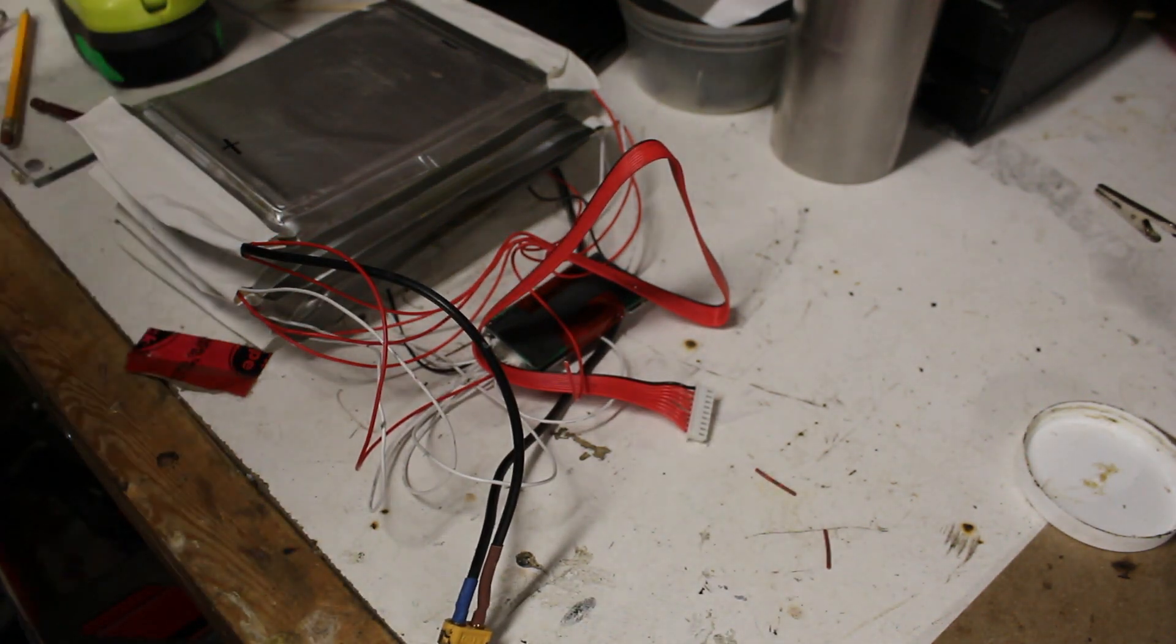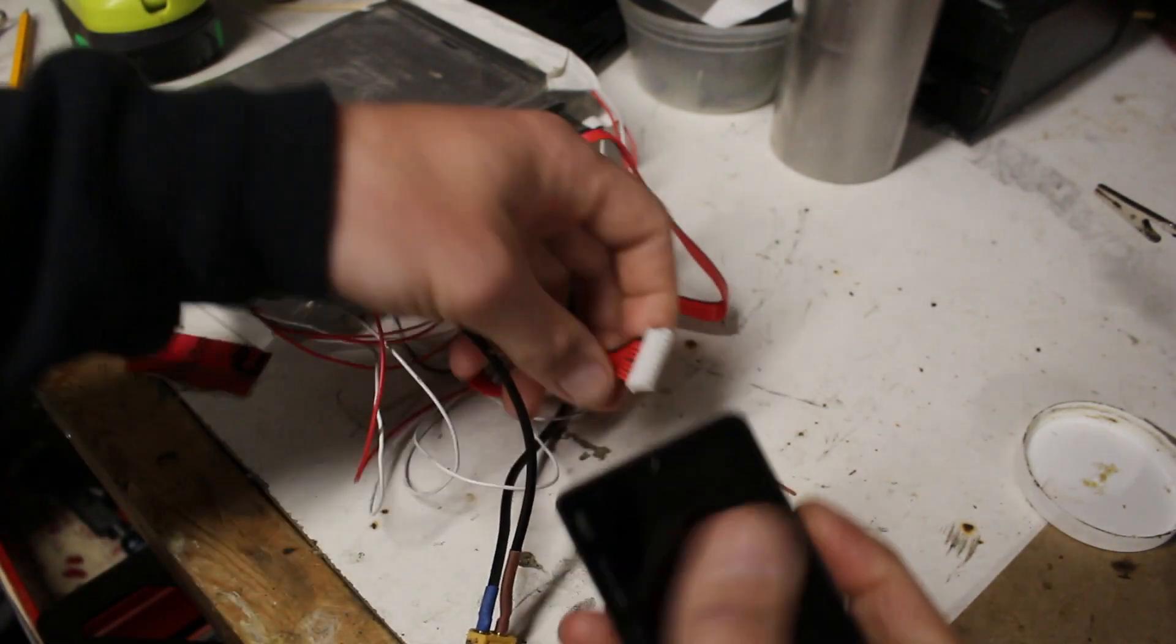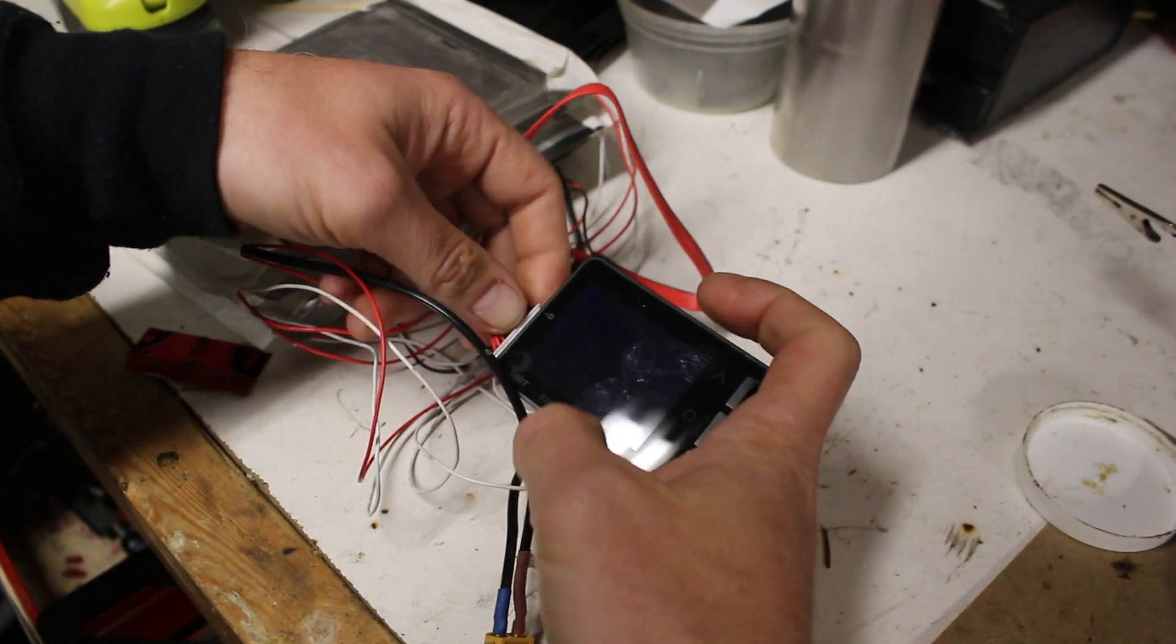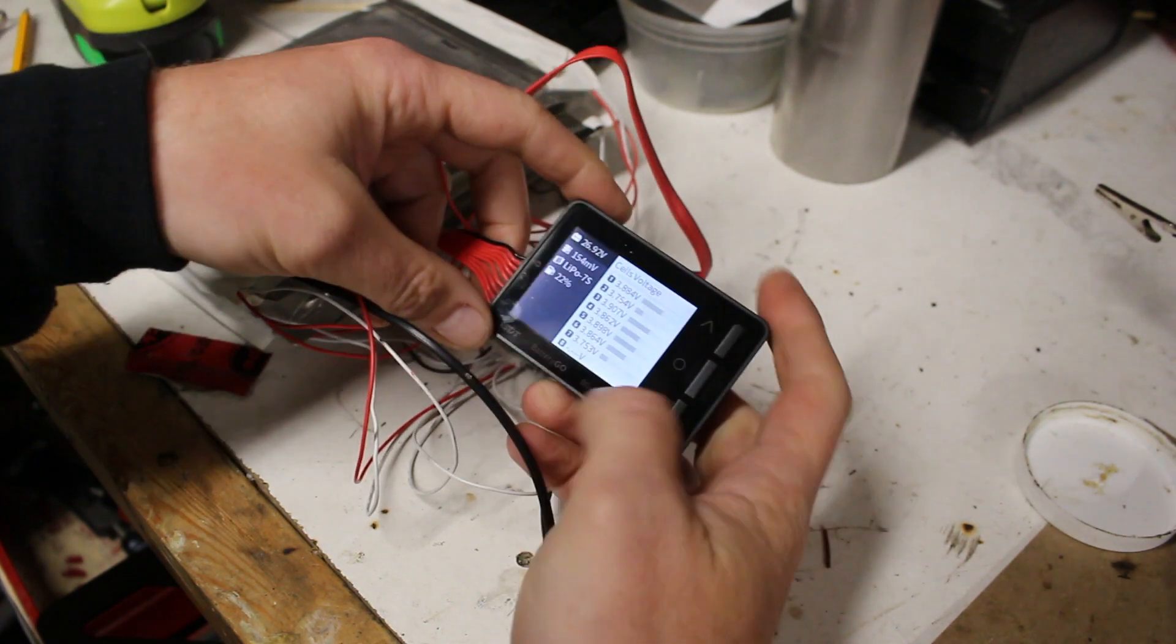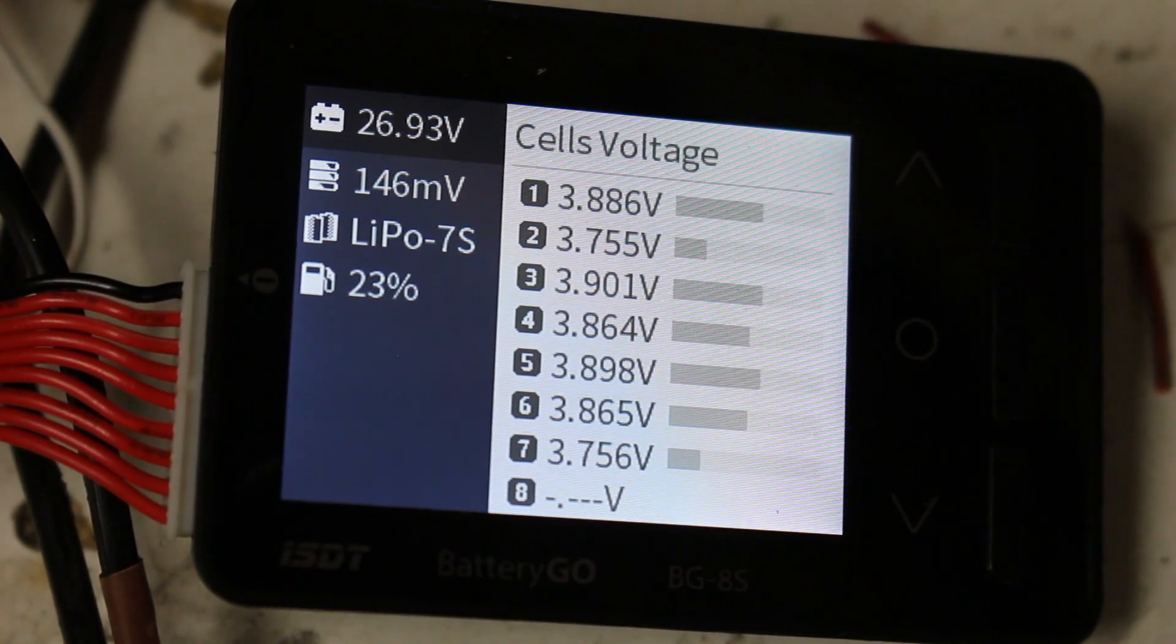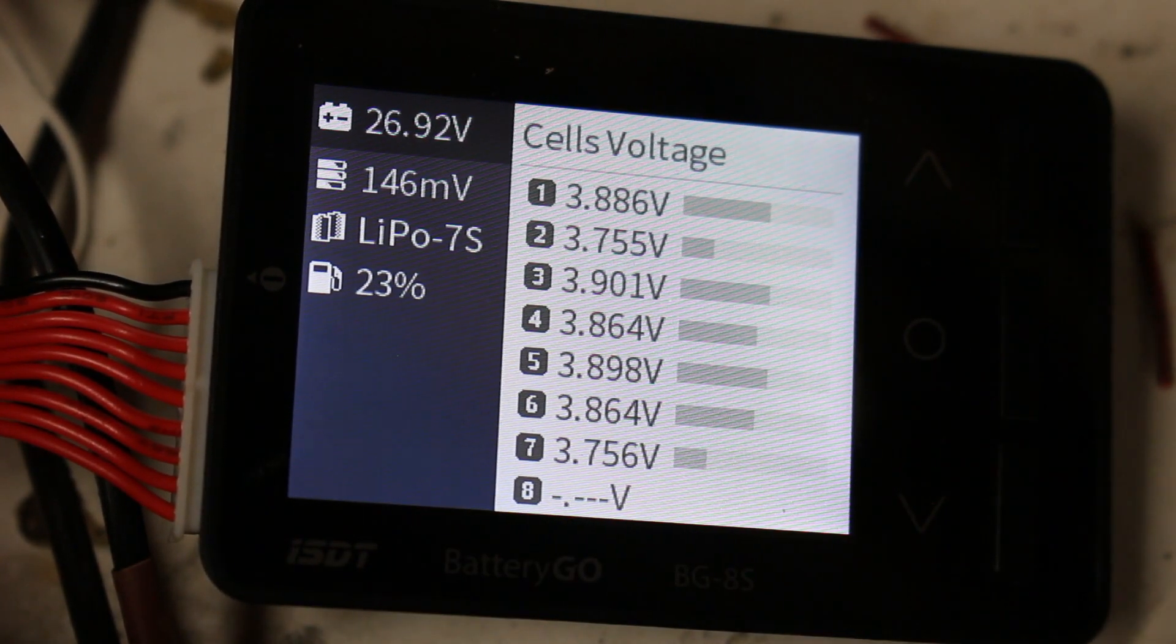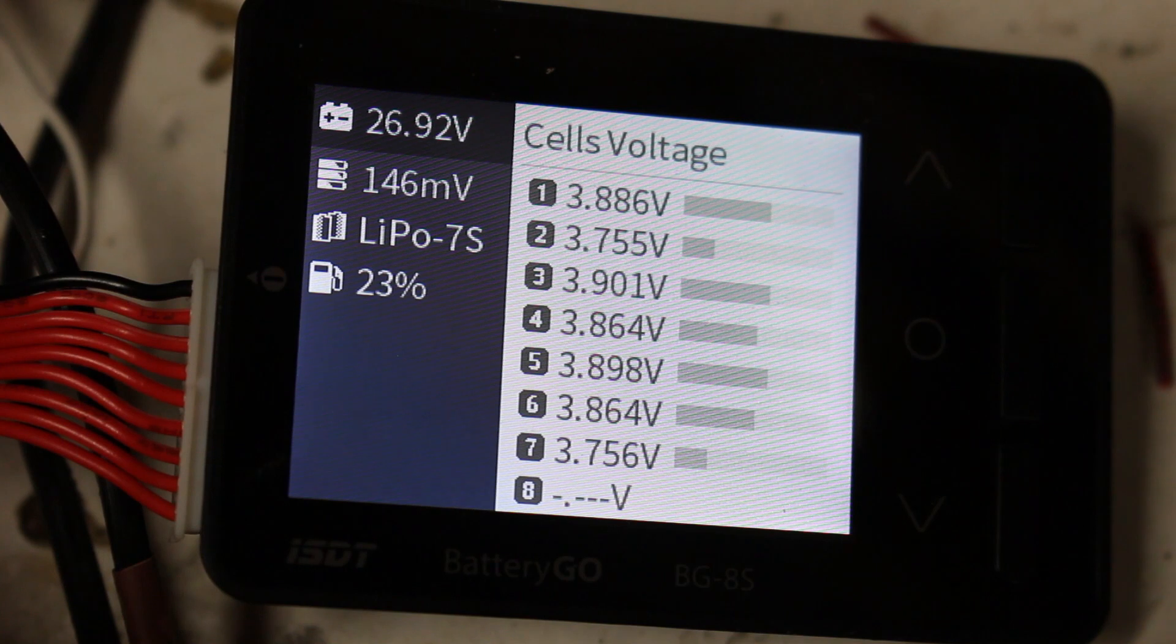Now I'm going to check my battery monitor and see what each cell is reading, how far out of balance our pack is. Okay, so here's what our battery monitor says. 26.9 volts for the pack, that's correct.